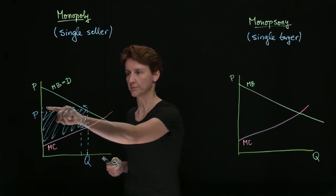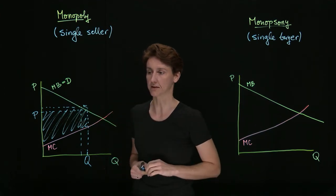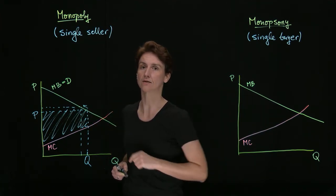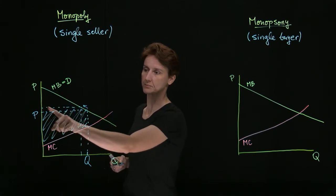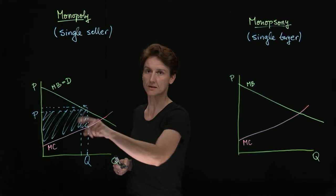So they will price above the competitive level. There will be deadweight loss in the market. But they will be able to choose the price that maximizes this area, their surplus.